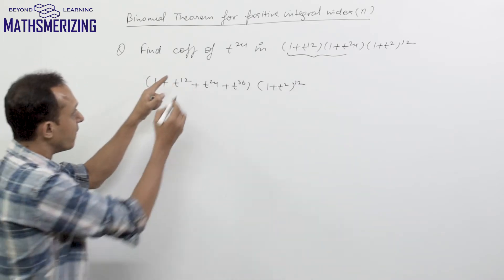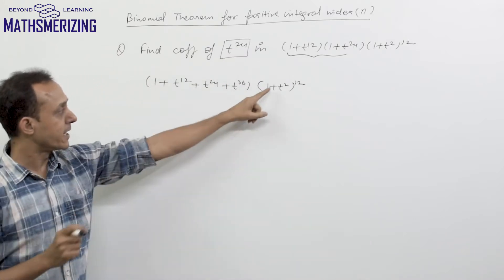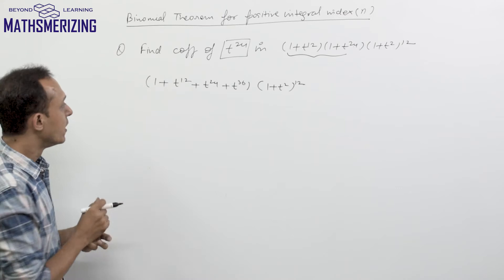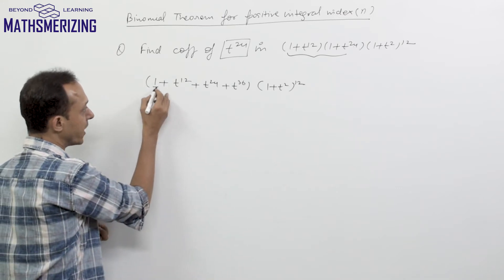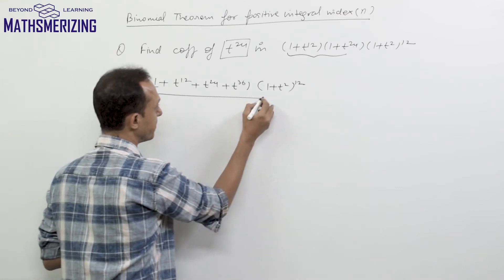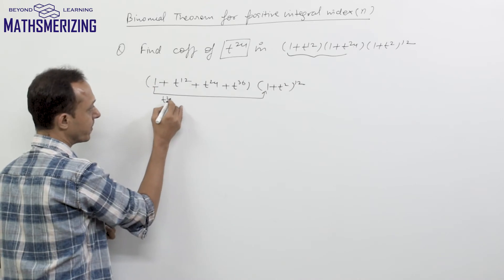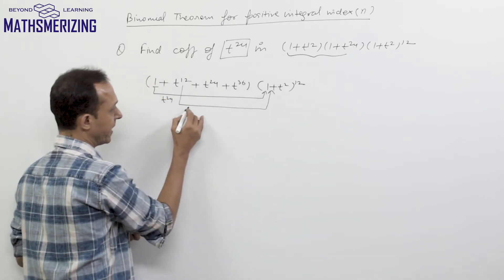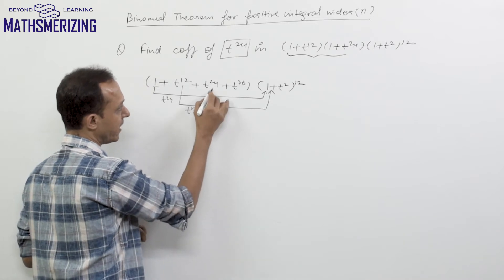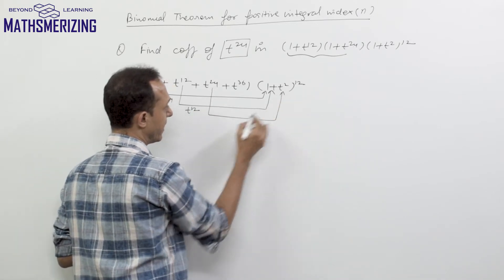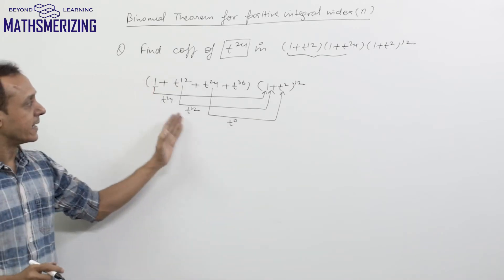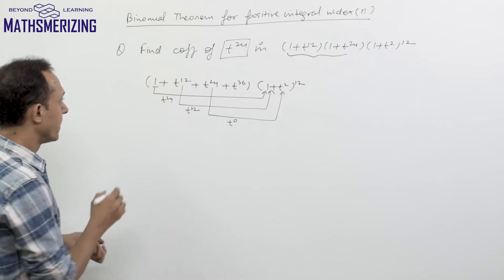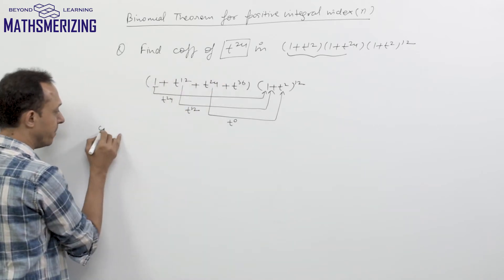Now I need the coefficient of t²⁴. Every term in the first expansion gets multiplied with the second factor (1 + t²)¹². I get t²⁴ in three cases: when 1 is multiplied by t²⁴, when t¹² is multiplied by t¹², and when t²⁴ is multiplied by t⁰. The t³⁶ term cannot contribute to t²⁴, so it is excluded.